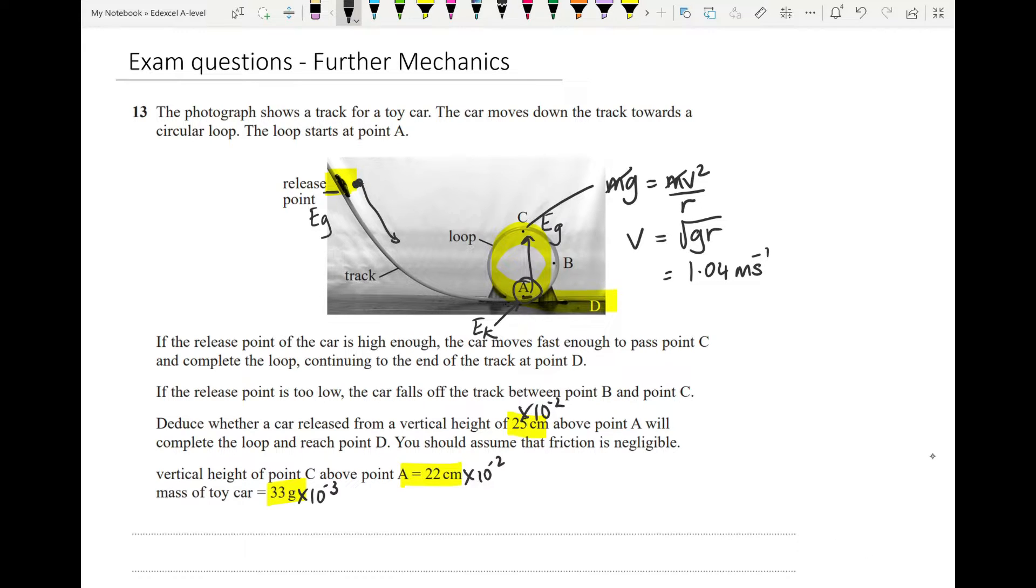Let's see how much kinetic energy that means. Kinetic energy is half mV squared. We have half times 33 times 10 to the minus 3 times our 1.04 squared. That gives us a kinetic energy of 0.0178 joules up there at the top at C. It must have that much kinetic energy, otherwise it's going to fall.